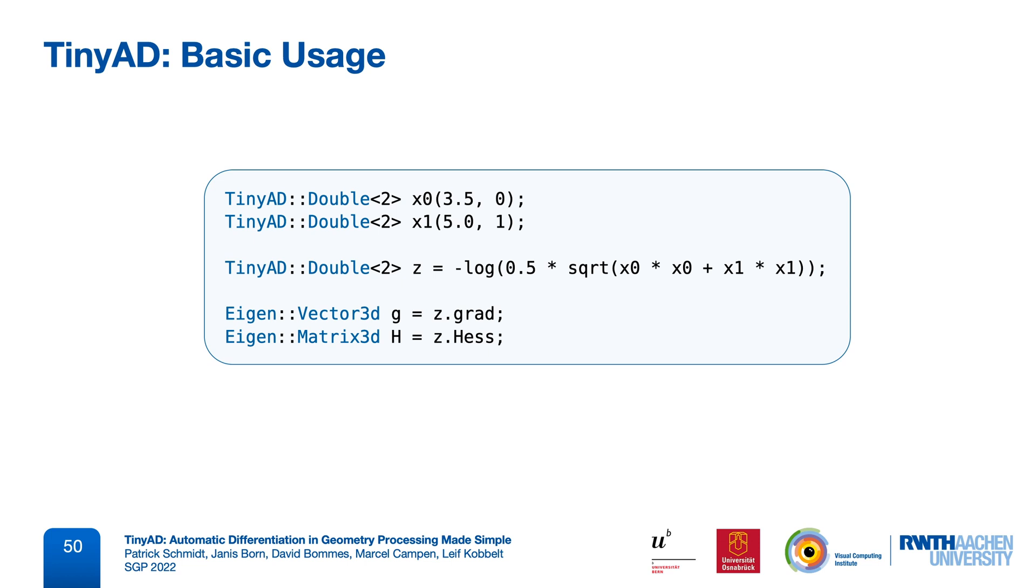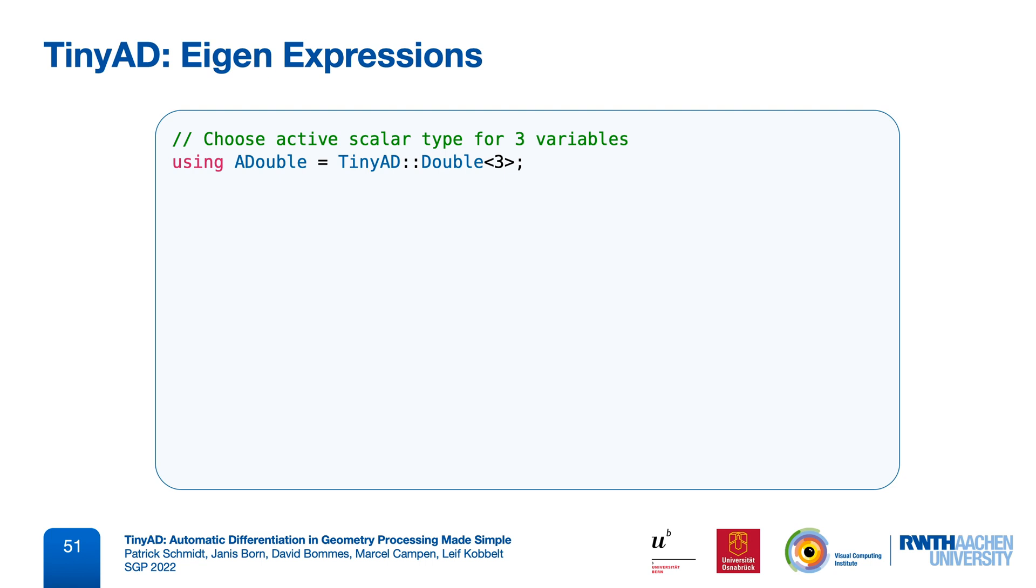Since we can work with TinyAD doubles just like with regular doubles, we can also use them inside of Eigen vectors and matrices. So for this, let's first create a typedef for our scalar type, and then initialize a vector of three variables, that are now indexed for us automatically. This already gives us access to differentiating all kinds of matrix and vector operations that are provided by Eigen.